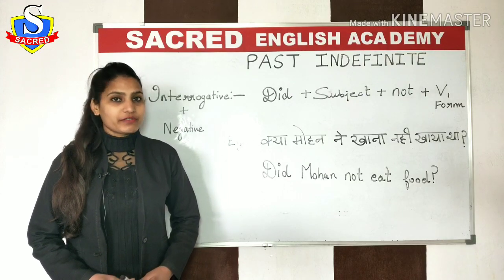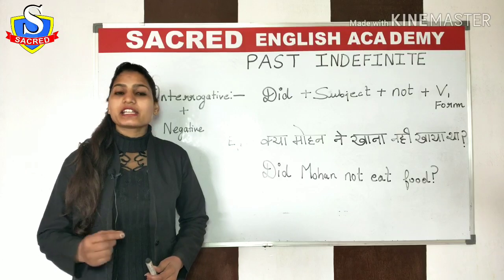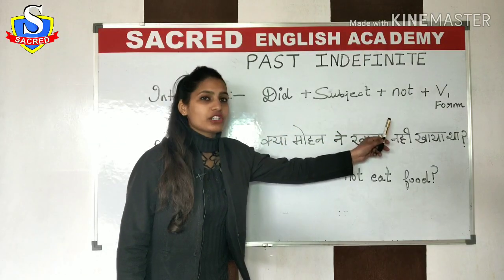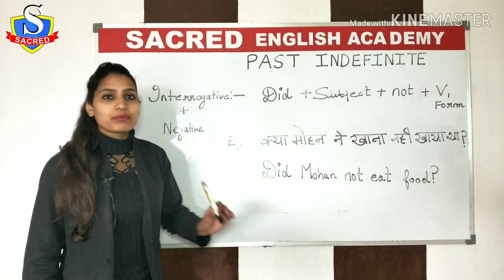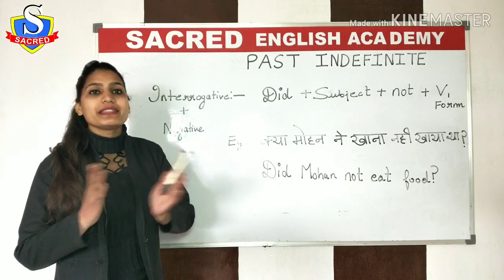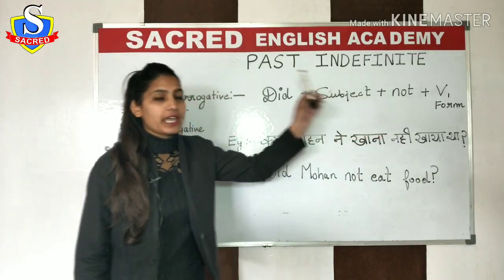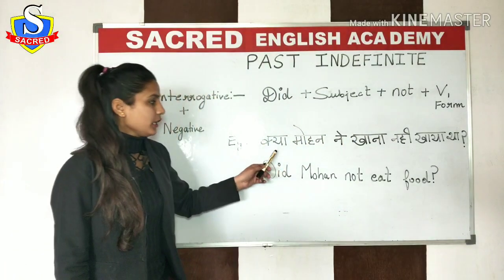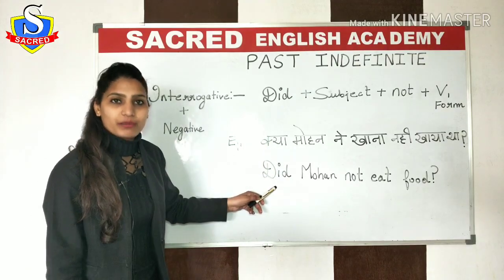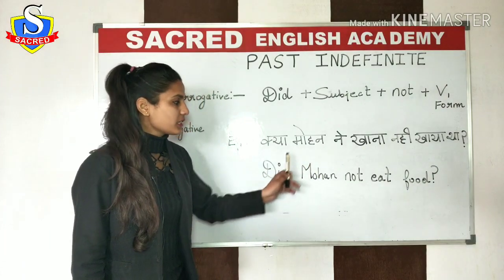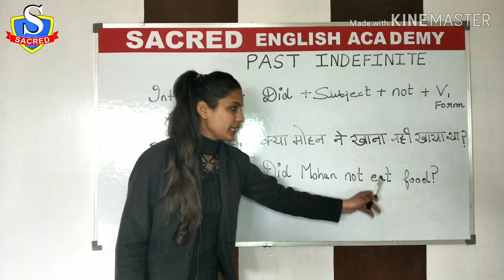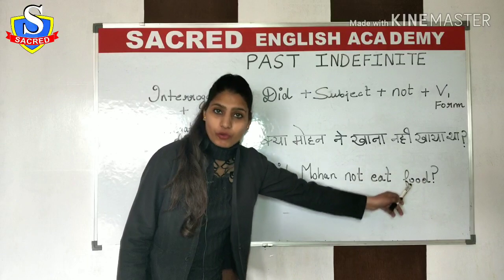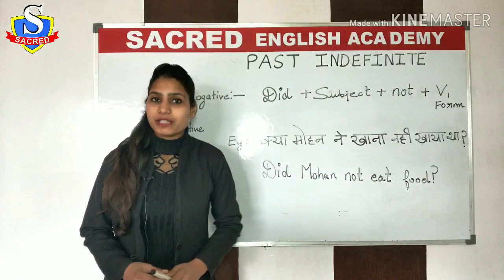Then we have the interrogative plus negative sentence. Interrogative matlab koi sawaal puchha ja raha hai; negative matlab usi sawaal ko 'na' mein puchha ja raha hai. The rule says: did + subject + not + verb's first form. Make sure jab bhi sawaal puchha ja raha hai, 'did' zaroor add karna hai, aur jab bhi negative ki baat aati hai, 'not' zaroor add karna hai — but stick to the rule. The sentence is: 'Kya Mohan ne khana nahi khaya tha?' In English: 'Did Mohan not eat food?' — 'eat' comes because it's the first form of the verb.